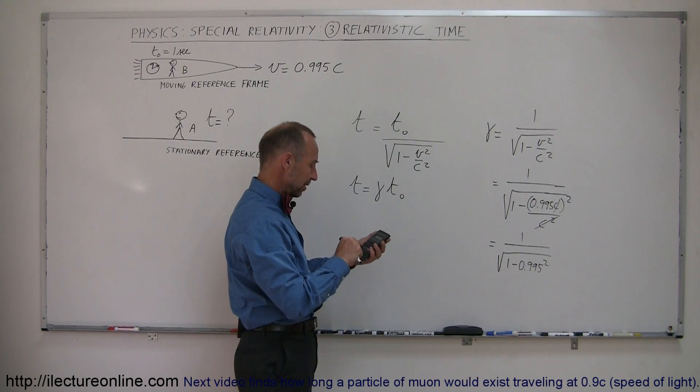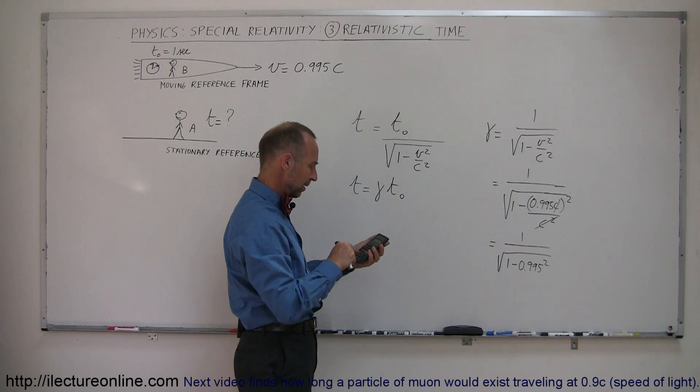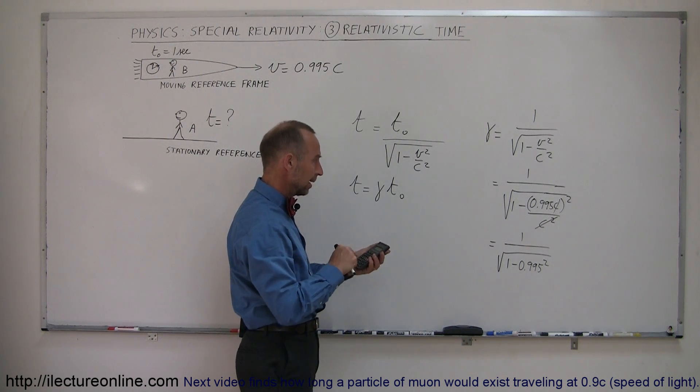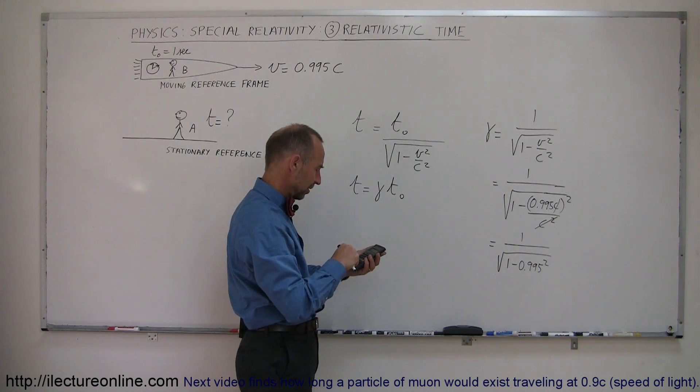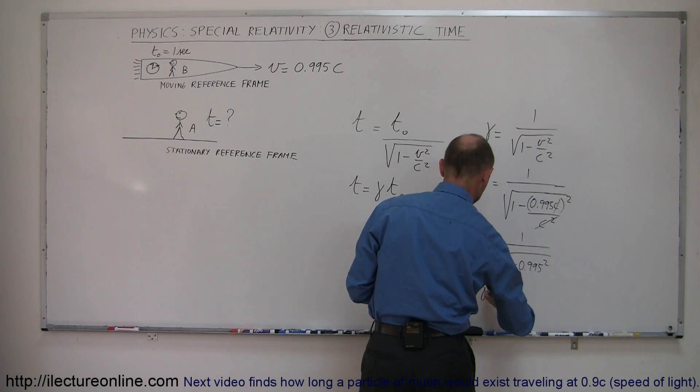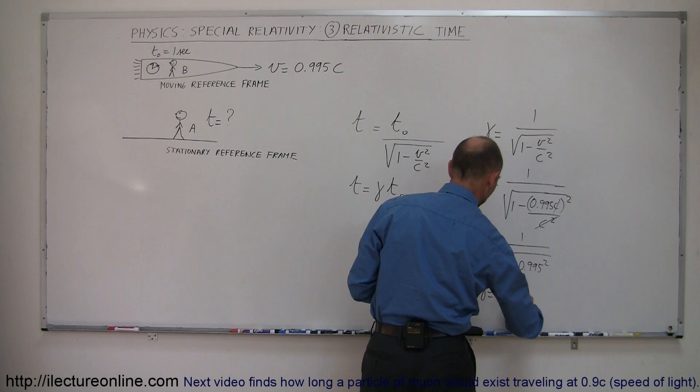So we square 0.995, subtract that from 1, then take the square root and the inverse. So gamma equals 10.0.